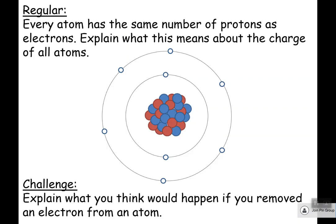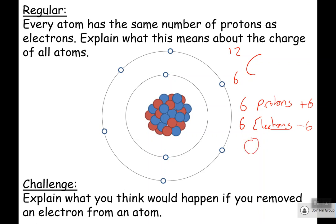Every single atom always has the same number of protons as it has electrons. For example, carbon atoms have six protons and also six electrons. The charge of six protons is plus six, and the charge of six electrons is minus six. Neutrons make no difference — they're neutral. The overall charge of every single atom is always zero, because they always have the same number of protons as electrons.